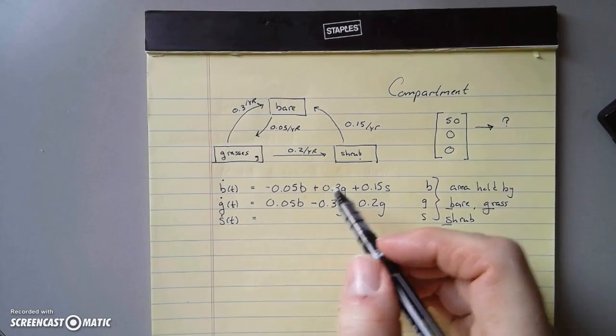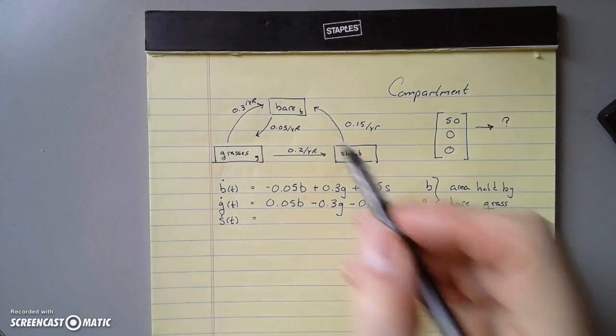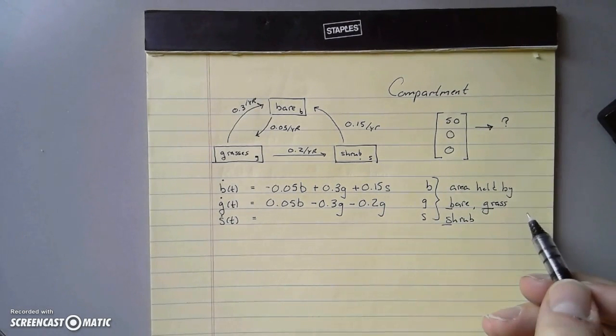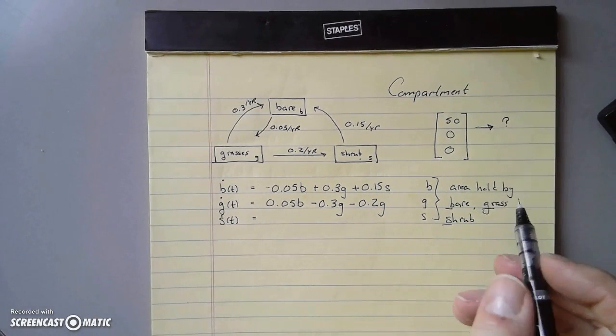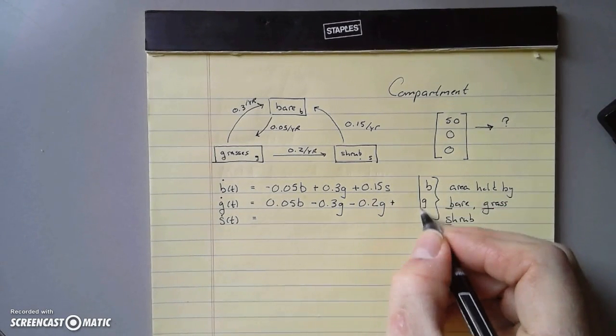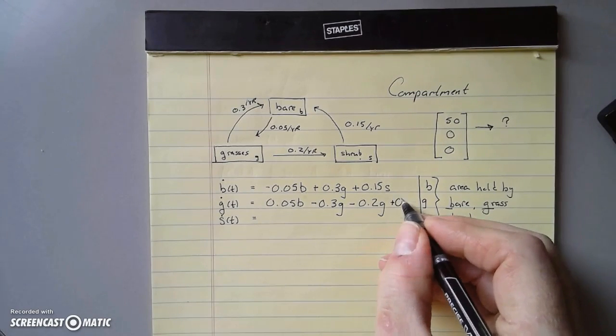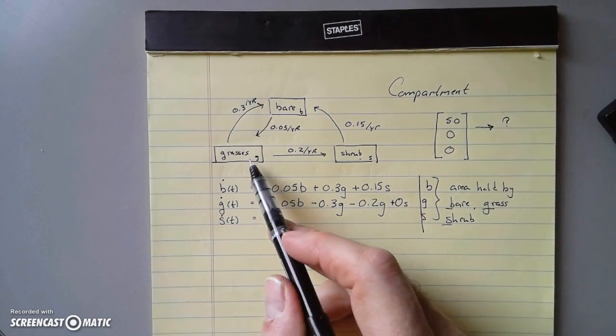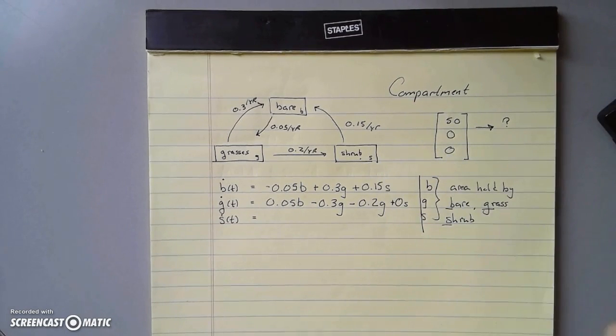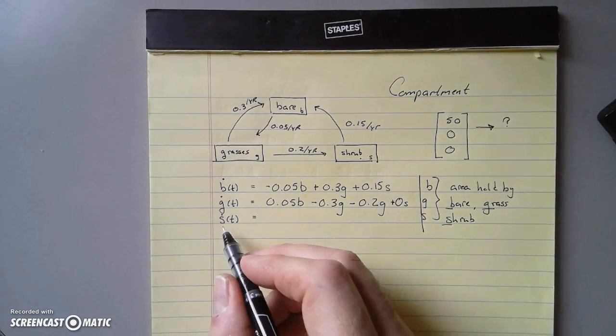Notice that I'm not using S here - it's 20% of G. G is telling me how much area is colonized by grass at any given time, B is telling me how much bare ground there is, S is telling me how much area is covered by shrubs at any given time.